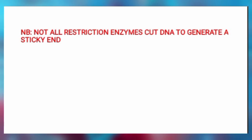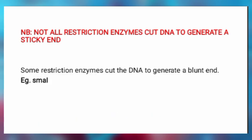One thing to note is that not all Restriction Enzymes actually cut the DNA to generate a sticky end. Some of them cut the DNA into equal parts, and at the end, a blunt end is also going to be generated. A typical example of such a Restriction Enzyme is SmaI.